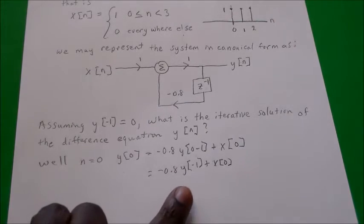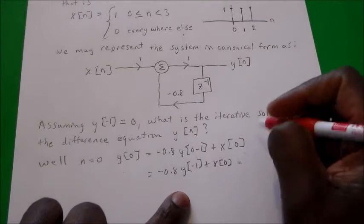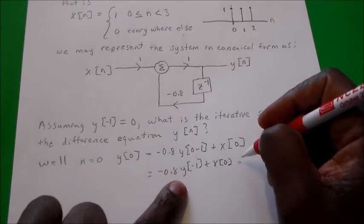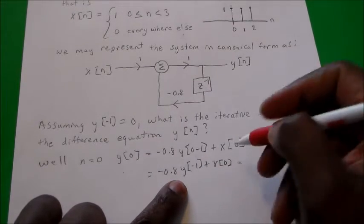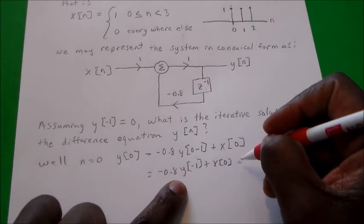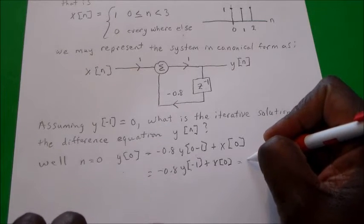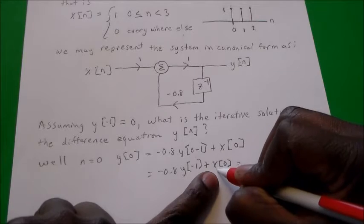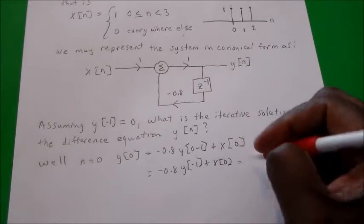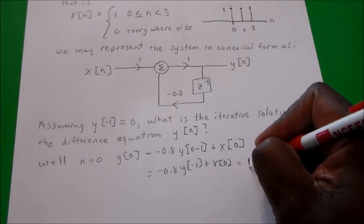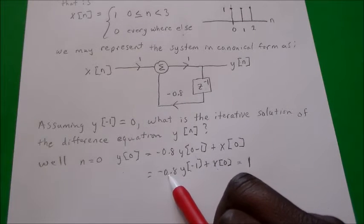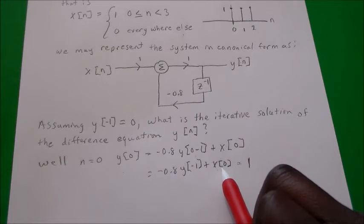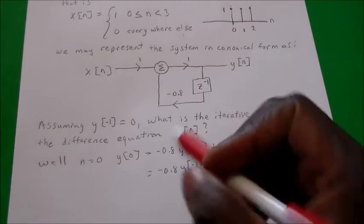We said that y(-1) = 0, and remember that x(0) = 1. So this term goes to 0 and x(0) = 1, giving us y(0) = 1.